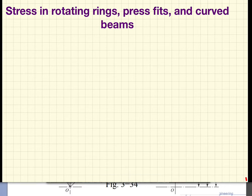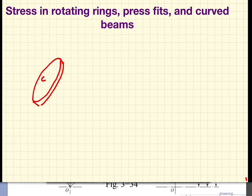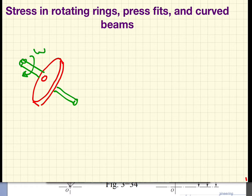We will discuss rotating rings. In this application we would have a ring like a flywheel, and the flywheel would be attached to a shaft that is used to transmit power. It is rotating at an angular frequency of omega, and we will be interested in finding out what happens when we have inertial forces that tend to tear this ring apart.